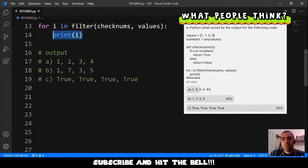Let's see the options that we have and we have these 3 options. Option A, 1, 2, 3 and 4. Option B, 1, 7, 3 and 5. And option C, true, true, true and true.